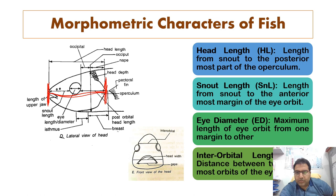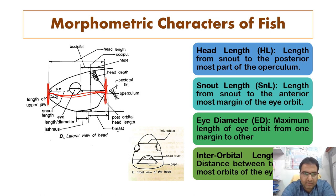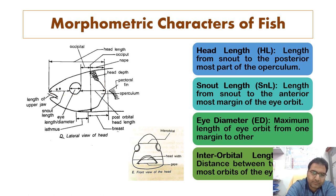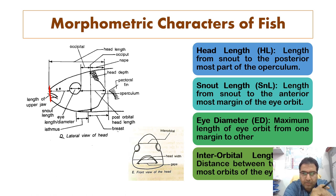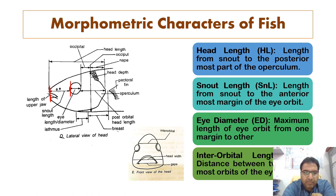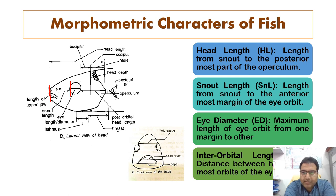The snout length is the length from the snout to the anterior-most margin of the eye orbit. So it is measured directly from the tip of the snout to the anterior-most margin of the eye orbit. This is called the snout length.